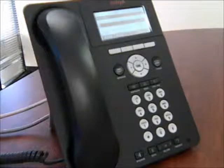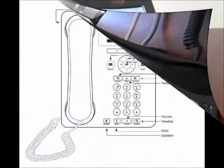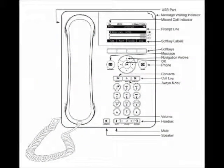Your new telephone, the Avaya 9620 IP telephone, provides many features. It includes a phone screen to view and manage your calls, a call log, a contacts list, and access to your voicemail.